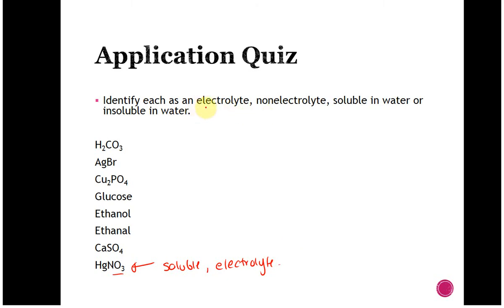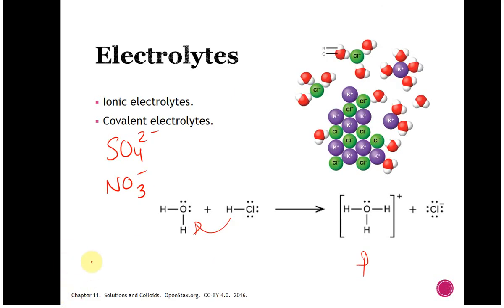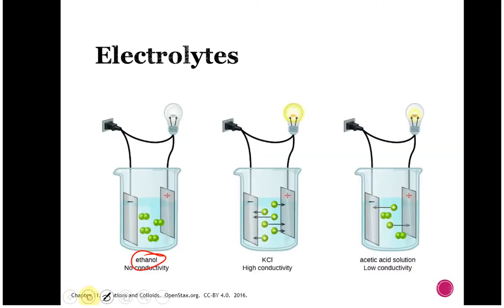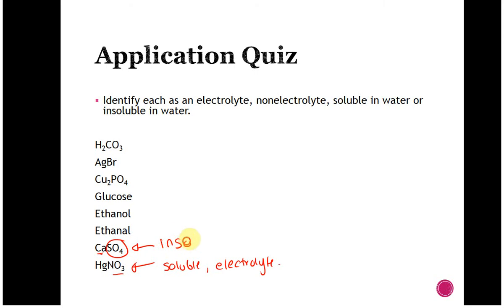Calcium sulfate: calcium is not a group one metal — it's in group two. Sulfates are soluble, unless they're paired with calcium. Going back to our table: sulfates are soluble unless paired with barium, calcium, mercury, or lead. That calcium makes this insoluble. Because it's not soluble, it's not going to dissolve, it's not going to break apart and dissociate — so it's a non-electrolyte.